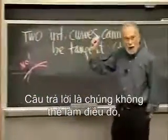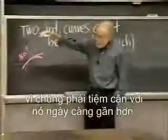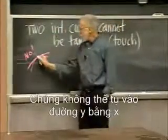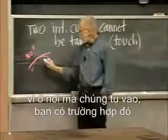The answer is they cannot do that because they have to just get asymptotic to it, ever, ever closer. They can't join y equals x because at the point where they join, you'd have that situation.